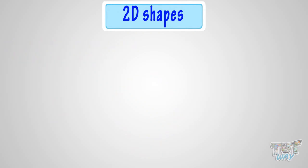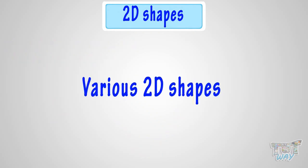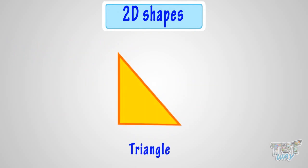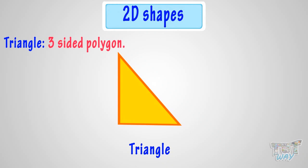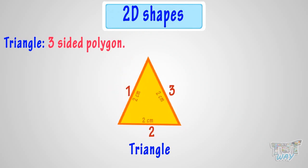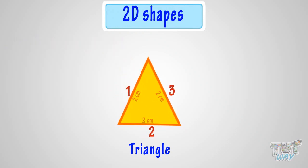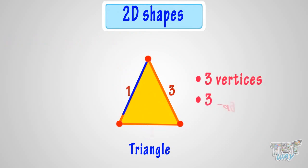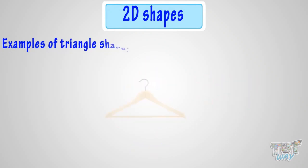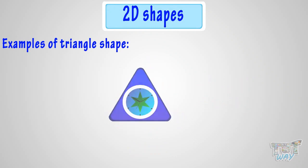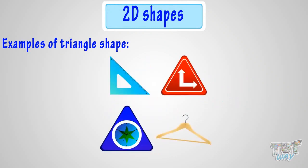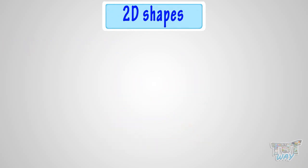Let's learn various 2D shapes. This shape is called a triangle, or a three-sided polygon. It has three sides, where all can be different or the same. It has three sides and three edges. Think of things that are triangle in shape — these are various things that are triangle in shape.